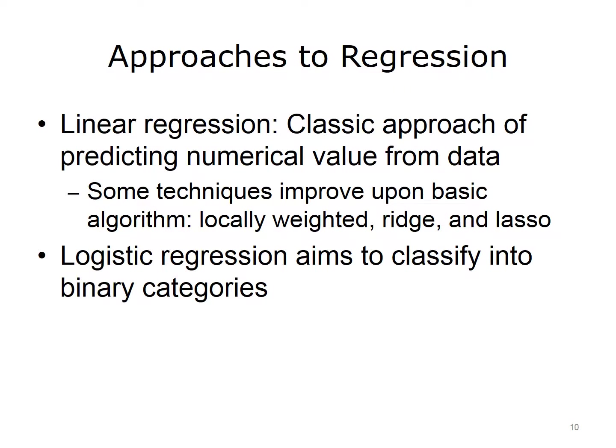There are likewise a number of different approaches to regression. Linear regression is a classical approach of predicting a numerical value from a set of data. There are various techniques that improve upon the basic algorithm of linear regression, such as locally weighted, ridge, and lasso techniques. Another type of regression is logistic regression, which is really more of a classification, in which we aim to classify data into binary categories.